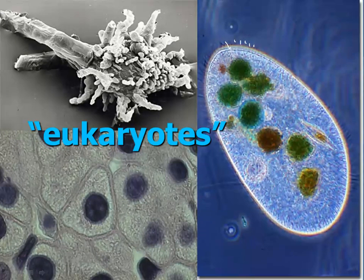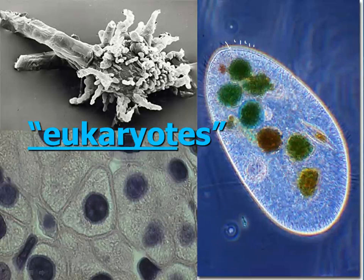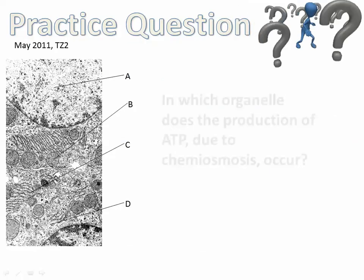Moving on to eukaryotic cells: here's a nerve cell, plant cells, and an amoeba — these are all eukaryotic cells. They all have a specific nucleus that should be identifiable. In this case, you can see it very clearly, and the chromosomes are actually visible inside, packaged safely inside a separate nuclear membrane.